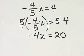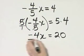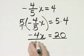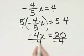And then how do we finish solving? We finish solving by dividing both sides by the coefficient of x, in this case, negative 4. The left side by negative 4, the right side by negative 4.